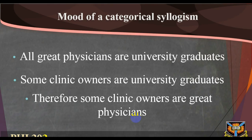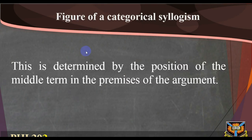In the first argument, the middle term occupies the predicate position of both premises. In the second argument, the middle term occupies the subject position of both premises. This explains the reason for their difference in form. The correct form of a categorical syllogism is identified by naming its mood and figure.